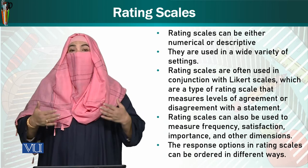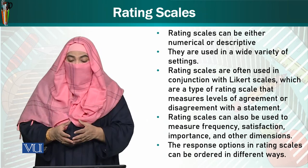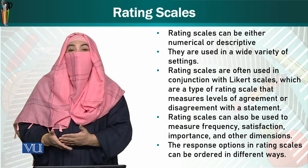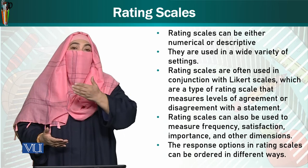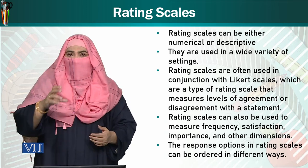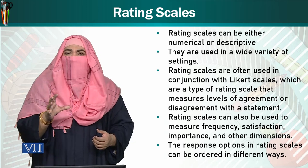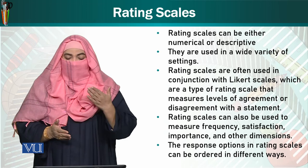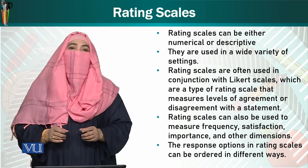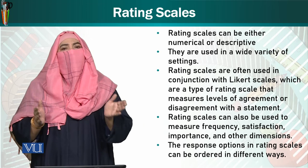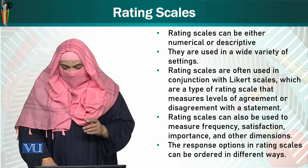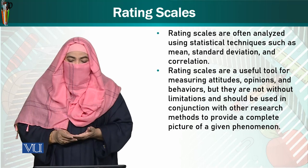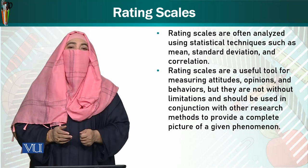We can ask about satisfaction from children as well as from their parents. There are many dimensions and behaviors that we can easily categorize — whether a child is doing something fully, partially, or not at all. The response options in rating scales can be ordered in different ways: 5 to 1, 1 to 5, 7 to 1, or 1 to 7. Rating scales are often analyzed using statistical techniques such as mean, standard deviation, and correlation.